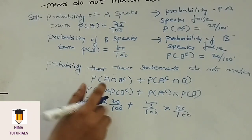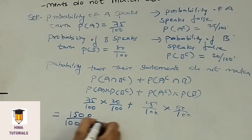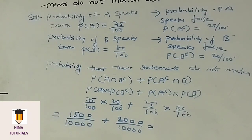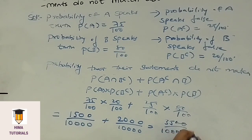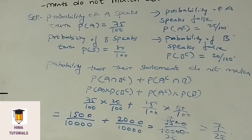Now we get 75 into 20, that means 1500 by 10,000, plus 25 into 80, which is 2000 by 10,000. 1500 plus 2000 is 3500 by 10,000. The zeros cancel, giving us 35 by 100, which simplifies to 7 by 20. Therefore, the probability that their statements do not match about an incident is 7 by 20. I hope it is clear. Please make a note of it.